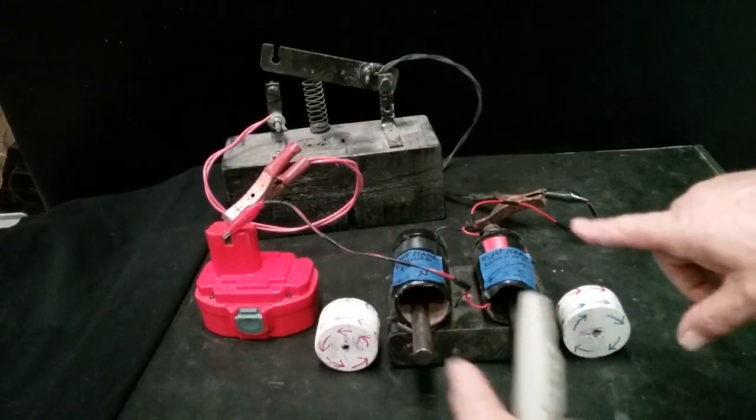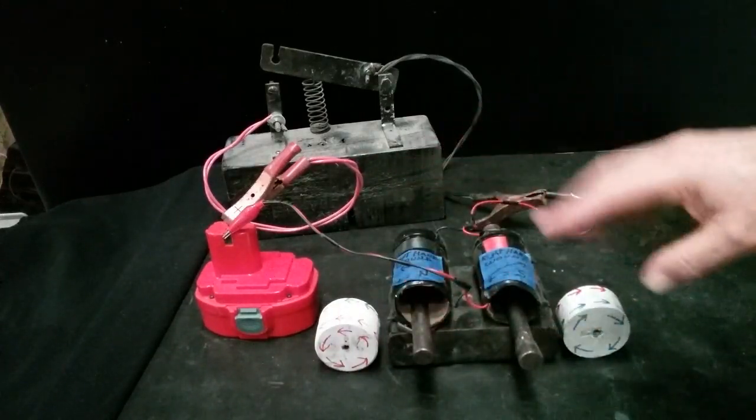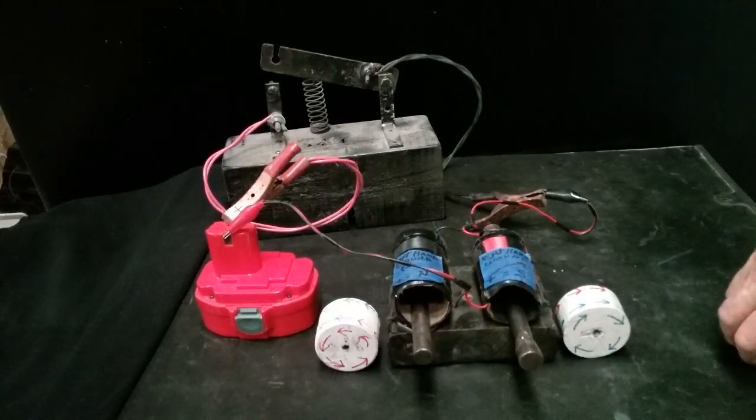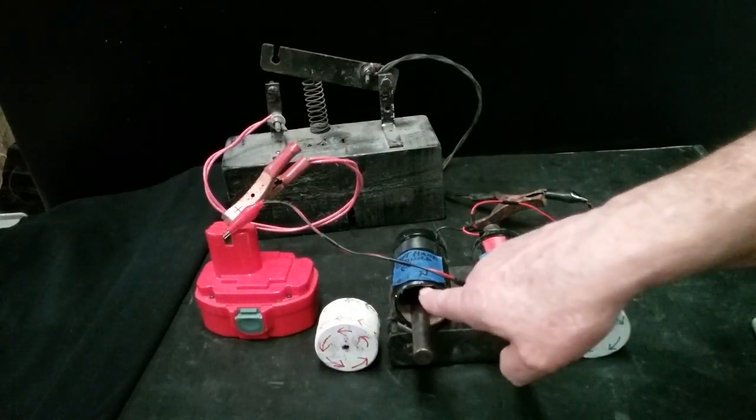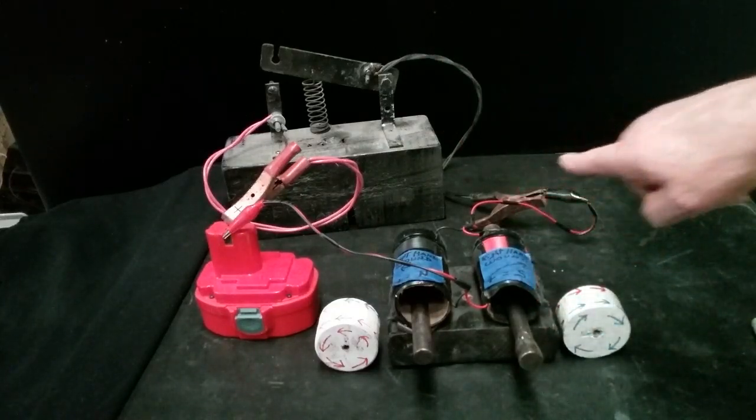So since the coils are wound opposite, we have a south-north and a north-south, just like magnets. It's like you're looking at the south-north end of a magnet on the left-hand wound coil, and you're looking at the south side of a magnet on the right-hand wound coil.